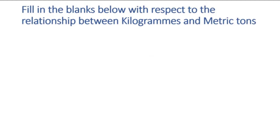Here is the first relationship. The first blank: 2350 kilograms is equal to how many tons? In order to convert kilograms to tons we have to divide by one thousand. If you divide 2350 by one thousand you will get a decimal answer, and that is 2.35. The zero at the end can be written or even if you neglect it, no problem — the value does not change.